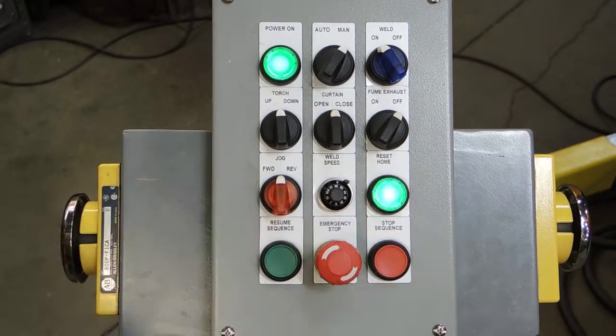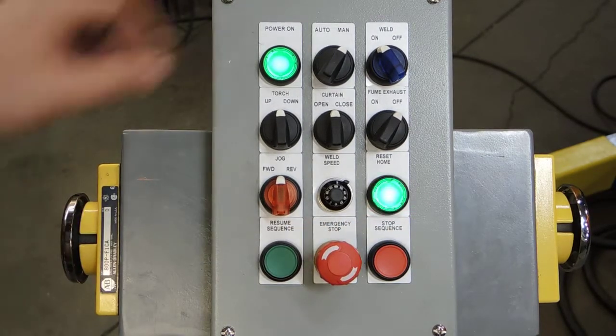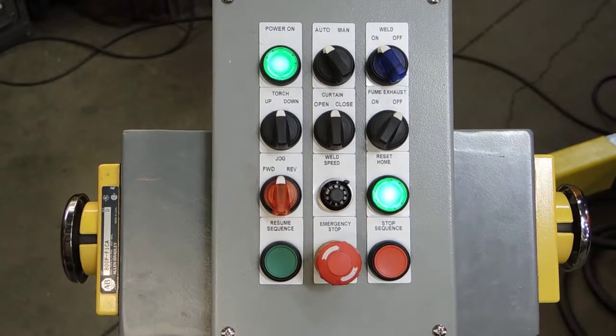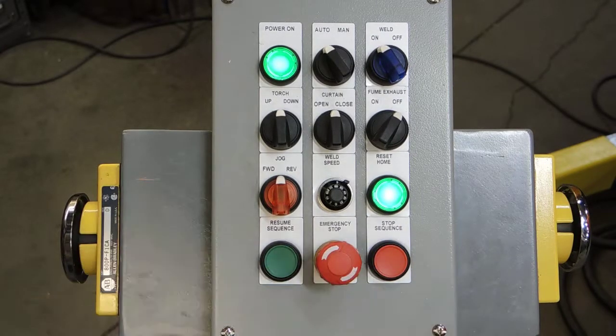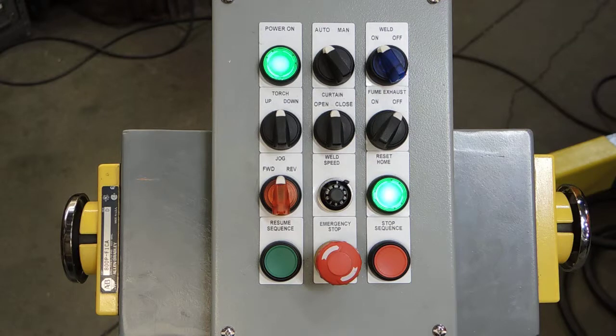We can hit the button once, put the machine back in automatic mode and it cycles back to the home position. When it's satisfied, that light goes steady.